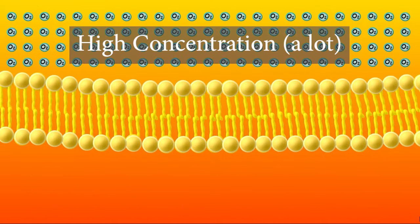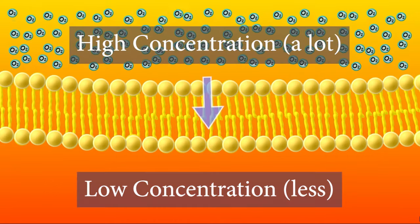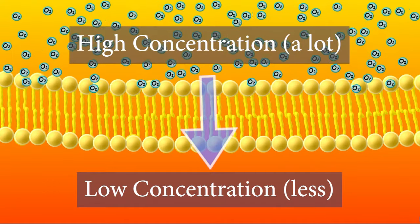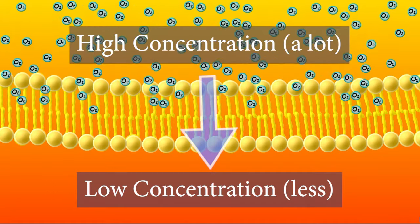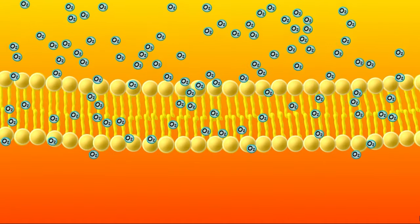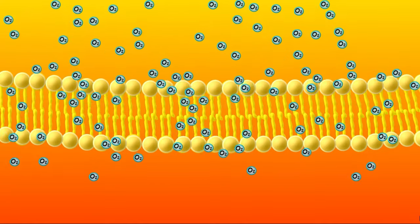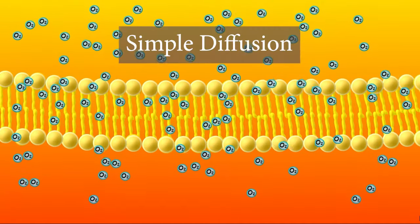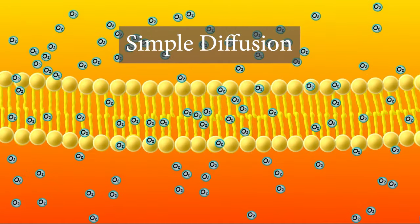You may recall from our last video that particles move from high concentration to low concentration, a process known as diffusion. For certain molecules, this process of diffusion happens straight across the phospholipid bilayer of a membrane, as shown with these oxygen molecules. This is called simple diffusion.